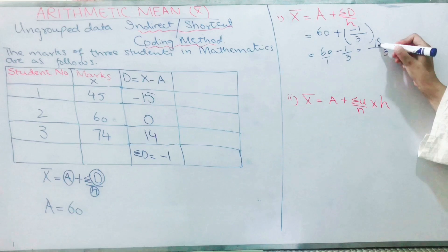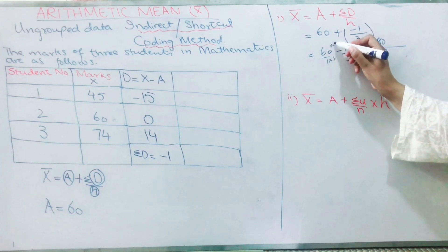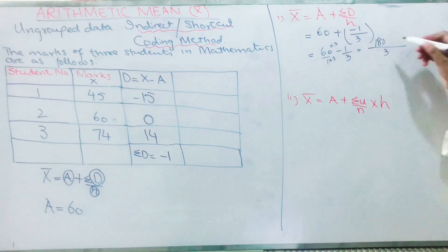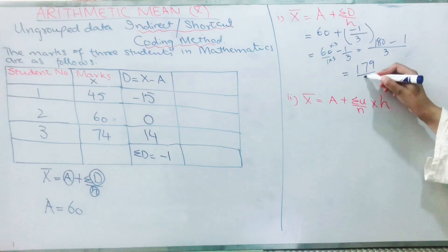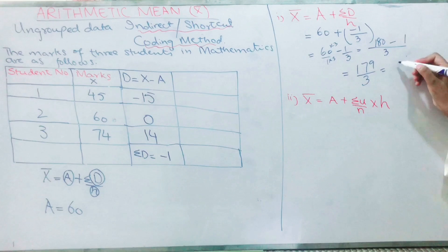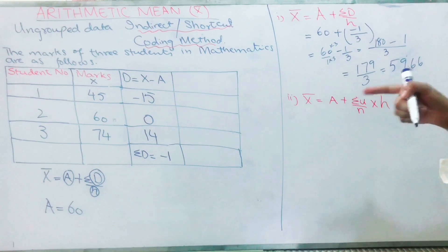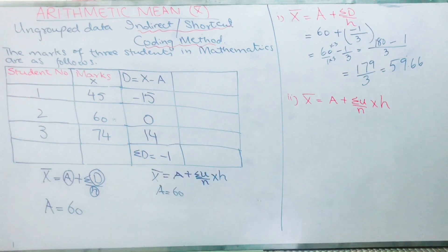So it becomes 3. So it will become multiplied with 3. 60 times 3 is 180 minus 1, that equals 179 by 3. 179 divided by 3 is 59.66. You will use the calculator to calculate it. So 59.66. If you remember that when we did direct method for ungrouped data using the same question, I got the same answer.